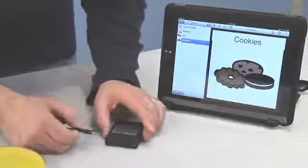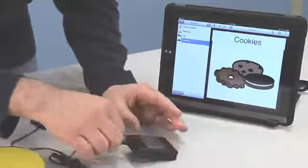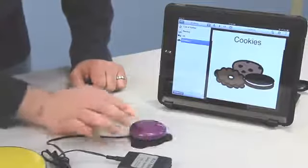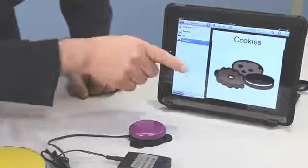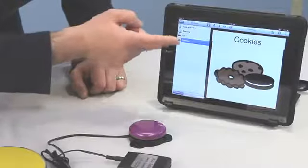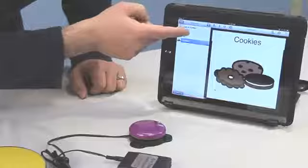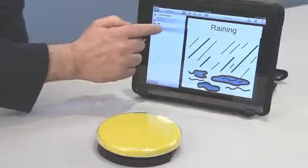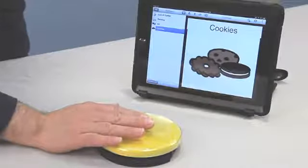So now with the iPad interface, plug your switch into the first jack. Every time I hit my switch, it's going to play the message. Now keep in mind, it is going to give you switch access to allow you to play the messages, but it's not going to allow the user to toggle up and down between these different messages. Somebody will have to do that for them.